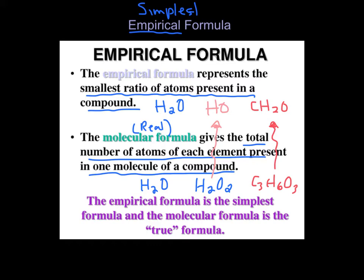The empirical or simplest formula is always the most reduced form. The molecular one isn't necessarily a reduced form, but it could be. Sometimes the molecular formula and empirical formula are the same, but oftentimes there's some simplified version of it. Divide by 2, divide by 3.